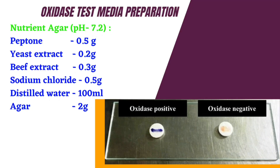For media preparation, nutrient agar is prepared at pH 7.2. The media composition is: peptone 0.5 gram, yeast extract 0.2 gram, beef extract 0.3 gram, sodium chloride 0.5 gram, agar, in 100 ml of distilled water.